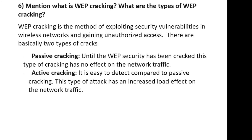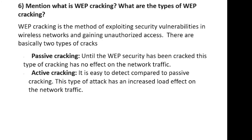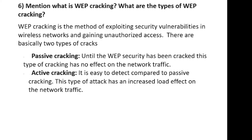What is web cracking and what are the types of web cracking? Web cracking is a method of exploiting security vulnerabilities in a wireless network and gaining unauthorized access. There are basically two types: passive cracking and active cracking. In passive cracking, until the web security has been cracked, this type has no effect on the network traffic. Active cracking is easier to detect compared to passive cracking, and this type of attack has an increased load effect on the network traffic.